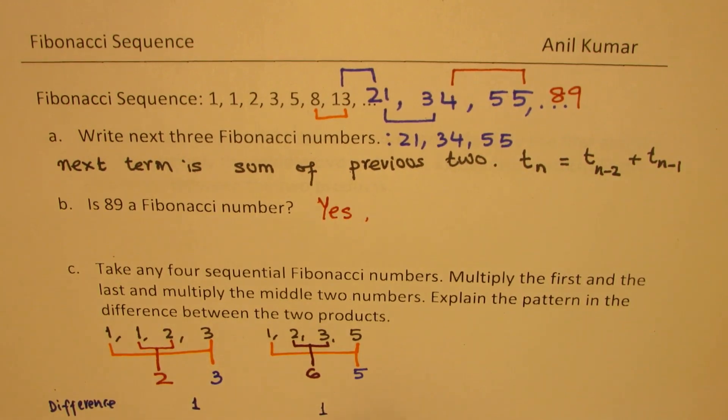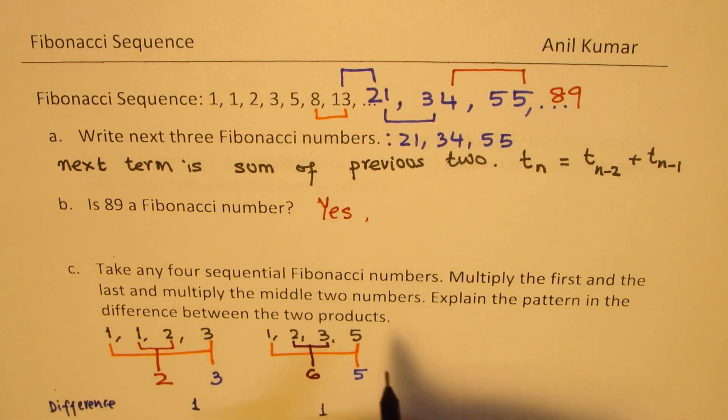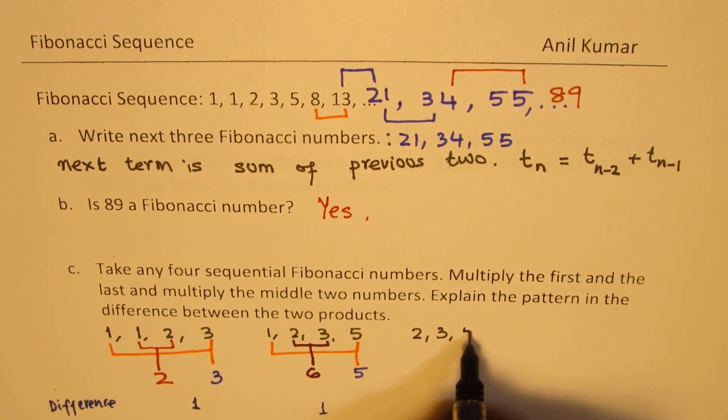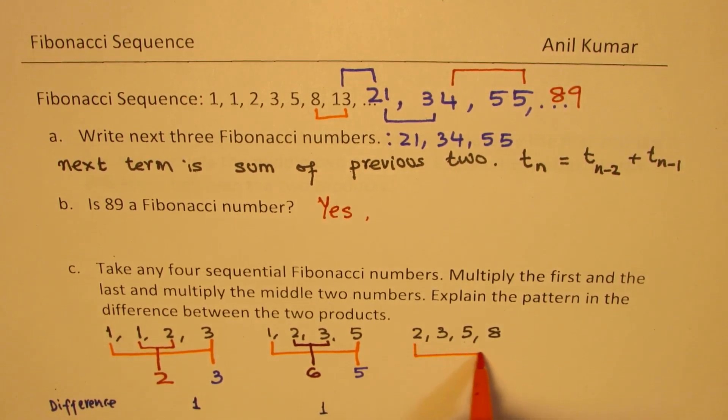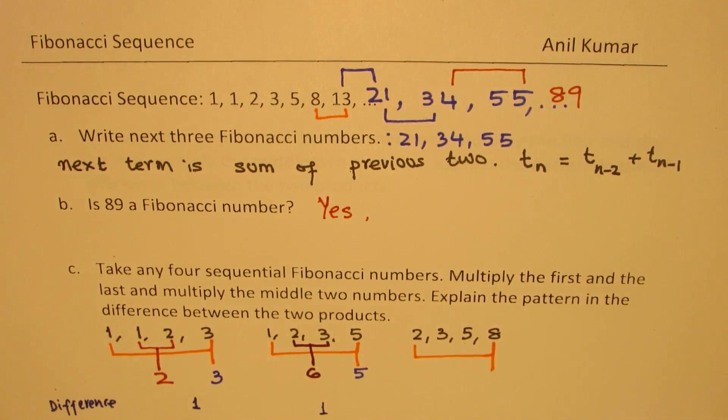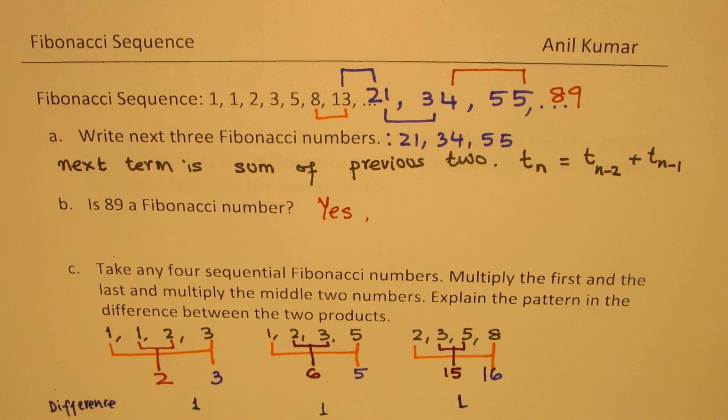Now let's take another set: 2, 3, 5, 8. If you multiply the outer numbers, which are 2 and 8, you get 16. If you multiply the inside numbers, 3 and 5, you get 15. The difference is still 1, but the outer number is now bigger.